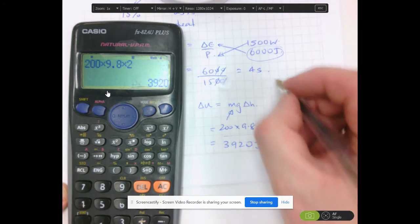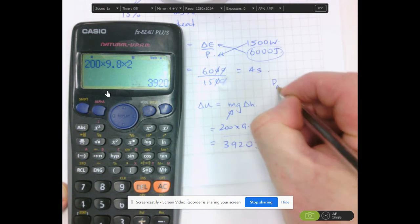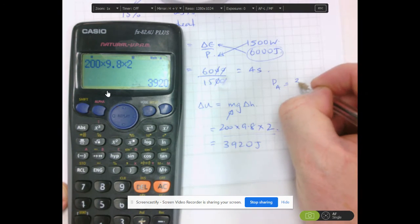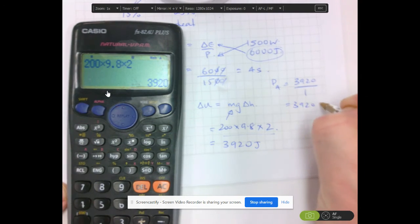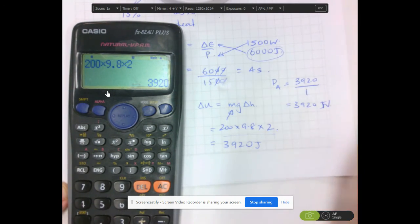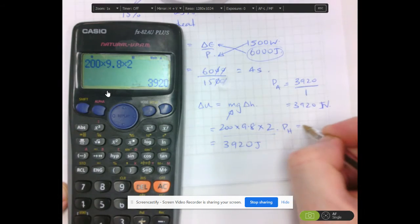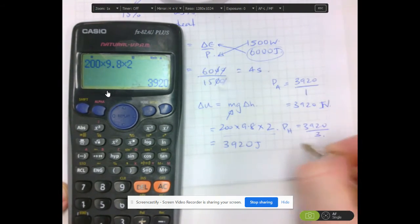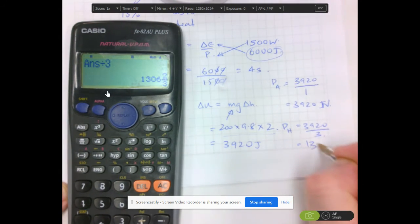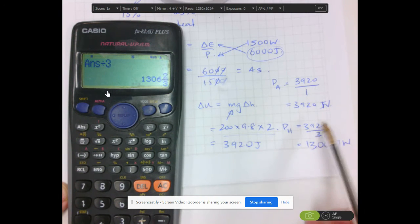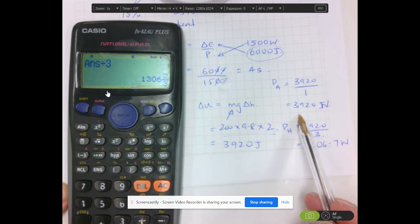However, one is doing it much faster than the other. They have a different rate. So the power for Atlas, P-A, would be 3920 divided by how many seconds he does it. He does it in one second. So that's 3920 watts. And Hercules, P-H, is 3920, but he's doing it in three seconds. So dividing this value by three, he's got 1306.7 watts. So who's more powerful? One with the higher power rating would be Atlas.